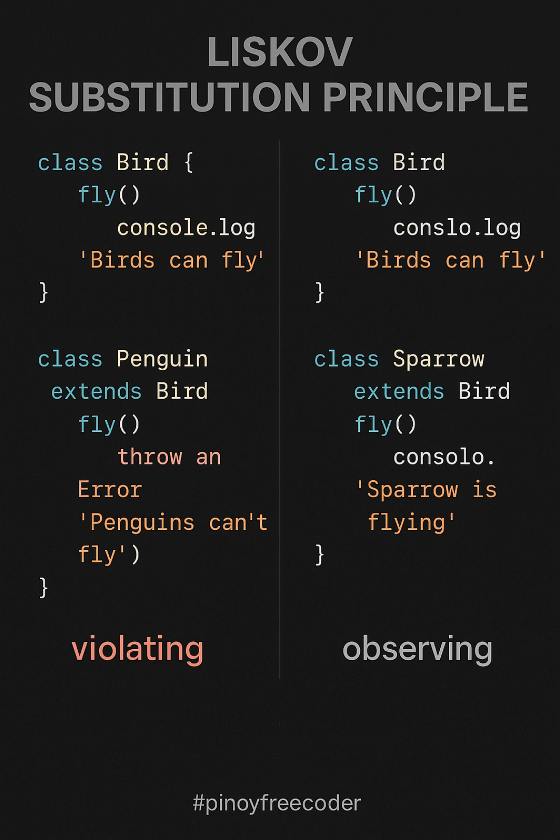On the right, we see a correct implementation. The sparrow class inherits from bird and behaves as expected. Both bird and sparrow can fly. This follows the Liskov Substitution Principle because the derived class sparrow can be substituted for the base class bird without breaking functionality.